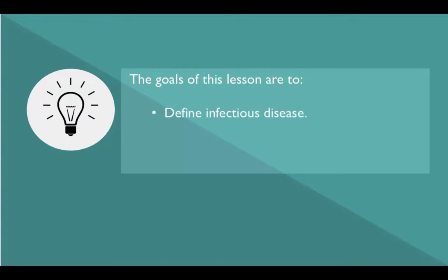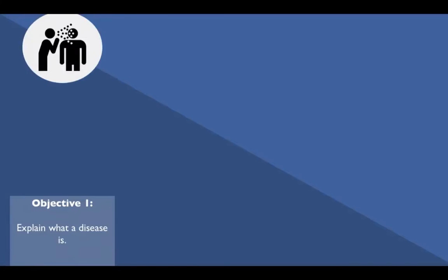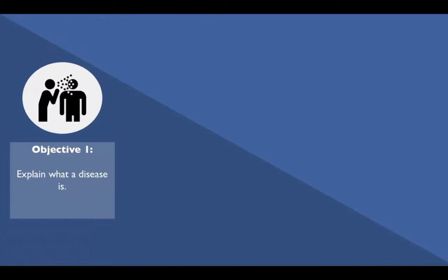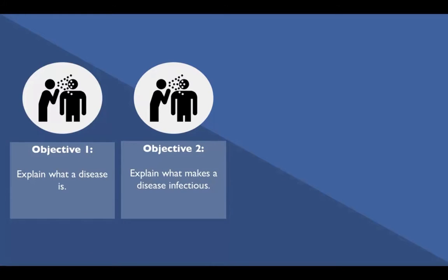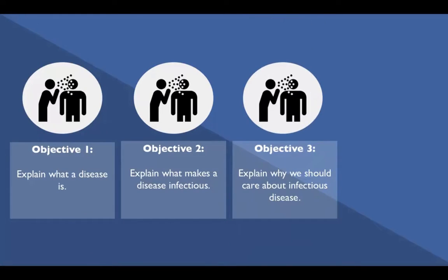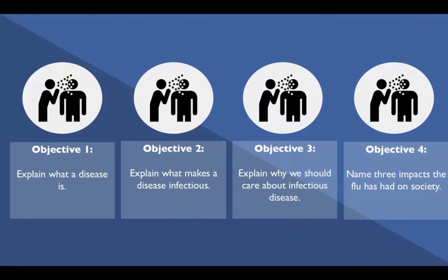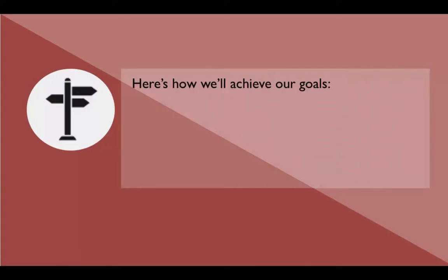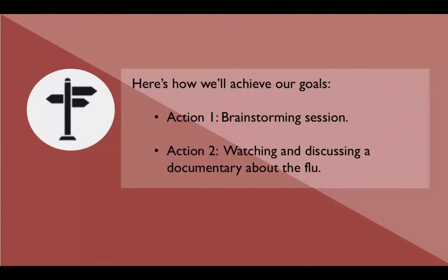The goals of this lesson are to define infectious disease and to describe how infectious diseases impact society. At the end of the lesson, students should be able to explain what a disease is, what makes a disease infectious, why we should care about infectious disease, and name three impacts the flu has had on society. We will achieve these goals with a brainstorming session and by watching a video documentary about the flu that challenges students' preconceptions of the impacts the flu has had on individuals and society.